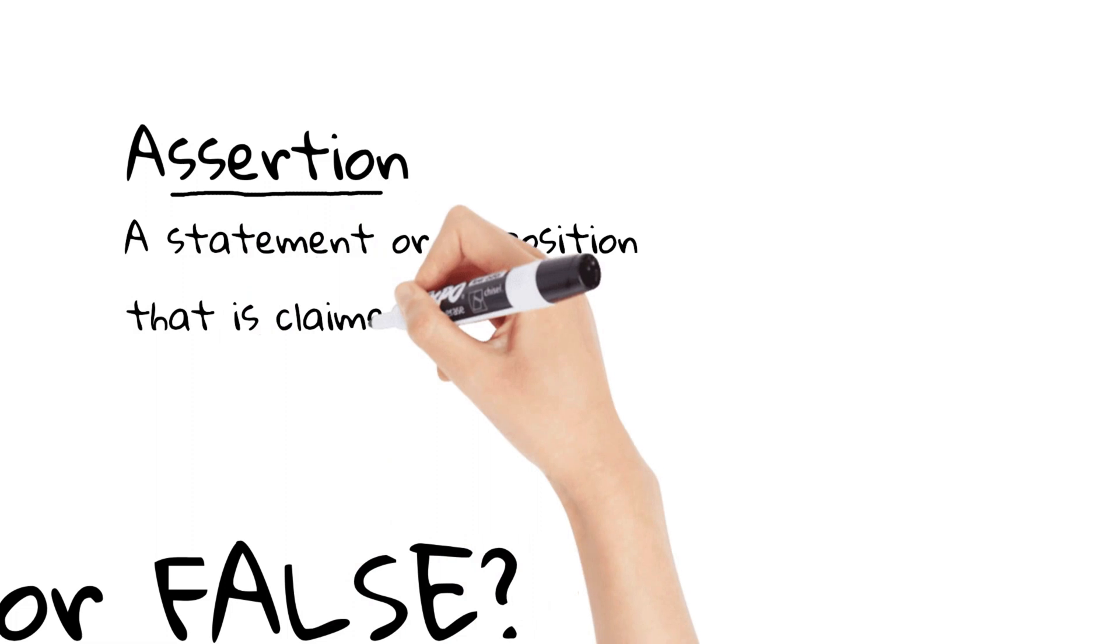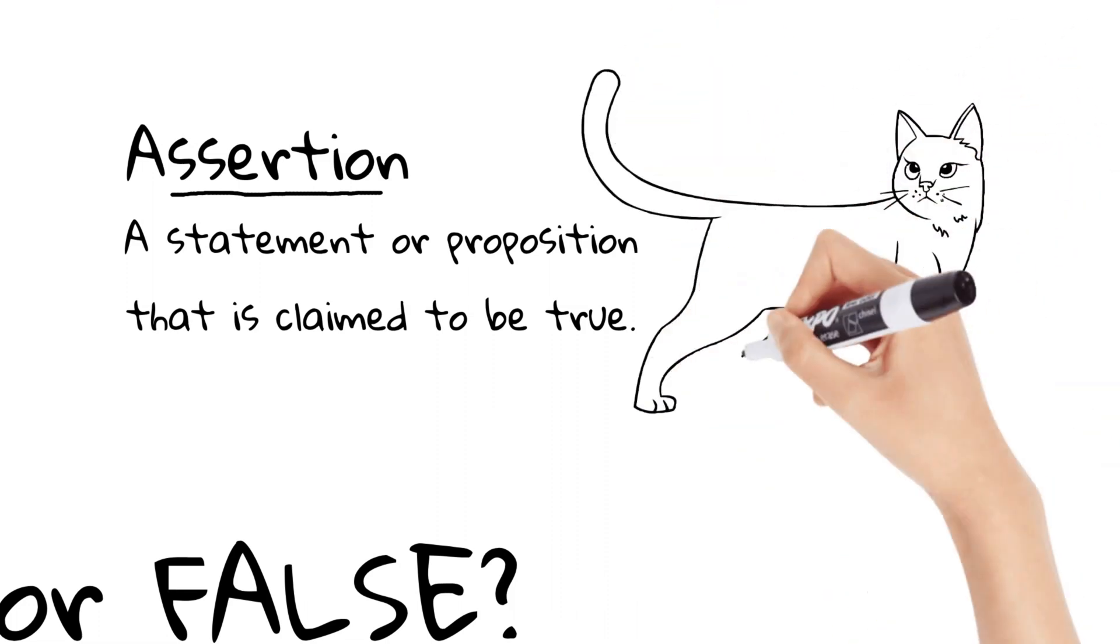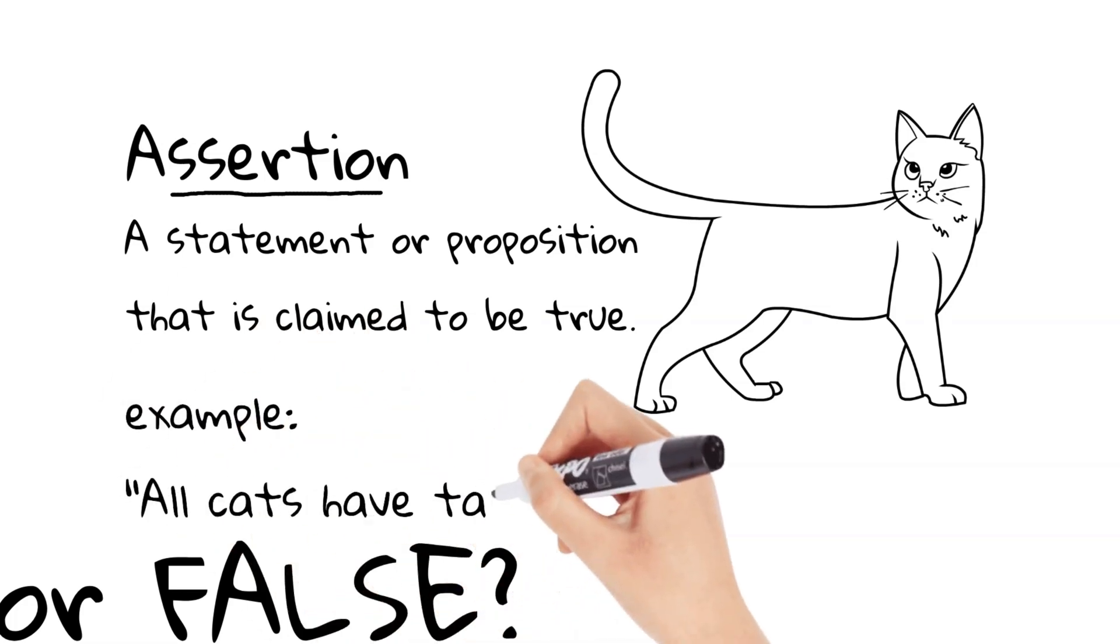Assertions. In logic, an assertion is a statement or a proposition that is claimed to be true. It is a way of expressing a fact or making a confident declaration about something. Assertions are often used as the basis for logical reasoning and analysis. For example, if we assert the proposition all cats have tails, we are implying that this proposition is true.